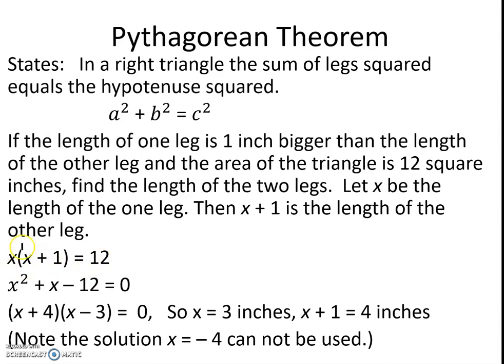Going ahead and distributing that x, we take x times x to get x squared, and x times 1 to get x, subtracting the 12 to the other side. We're left with x squared plus x minus 12. And that factors quite nicely into x plus 4 times x minus 3.